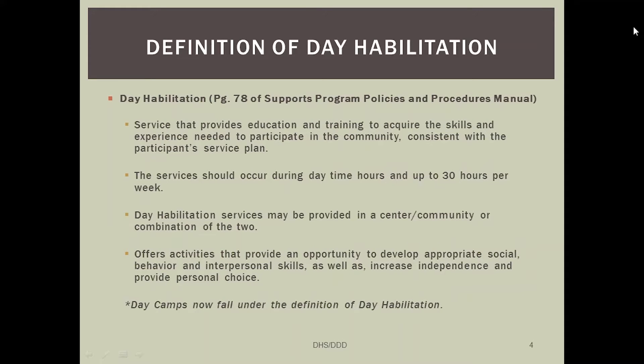One of the first issues we have had is people understanding the definition of day habilitation. You can look on page 78 of the supports program policy and procedure manual for specifics, but we are going to break it down for you. Day habilitation is services that provide education and training to acquire the skills and experience needed for individuals to participate in the community. It needs to be consistent with their service plan. The services should take place during daytime hours and can be up to a maximum of 30 hours per week. Day habilitation services can be provided in a center, in the community, or a combination of the two.